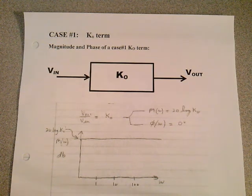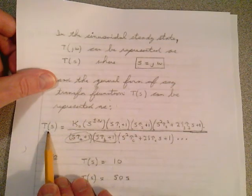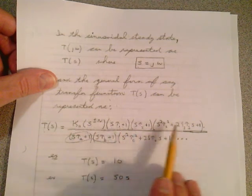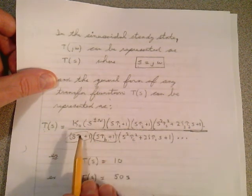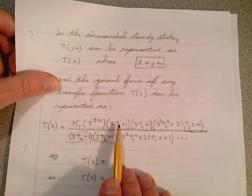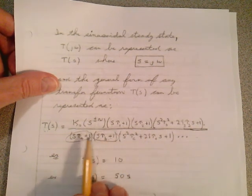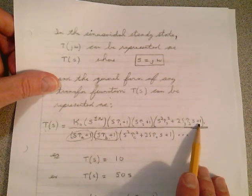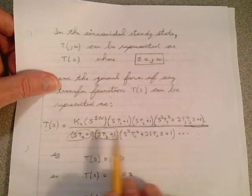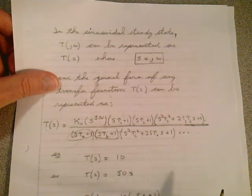Before we start on page 188, I want to take a quick review of the last lecture. Our transfer function T of S can be comprised of just a single constant K0 term, or any one of these other terms, either in the numerator or denominator. We had single S terms in the numerator or denominator. We called first-order terms in the numerator zeros, and first-order terms in the denominator poles. Zeros always break up at 20 dB per decade, and poles always break down at 20 dB per decade.